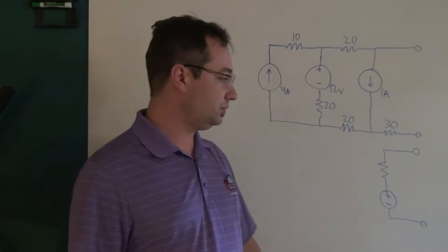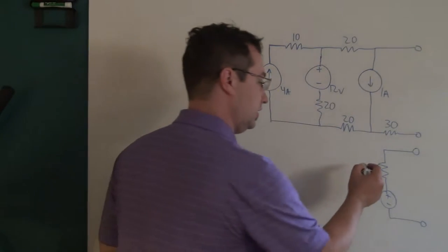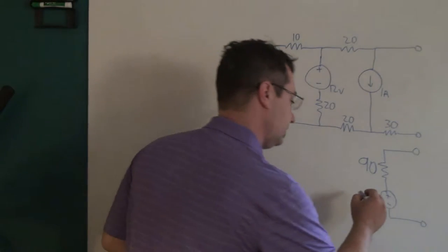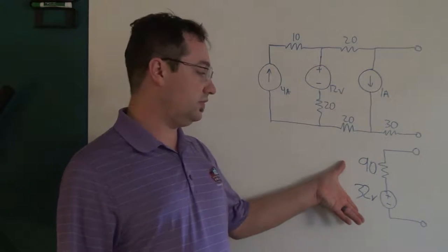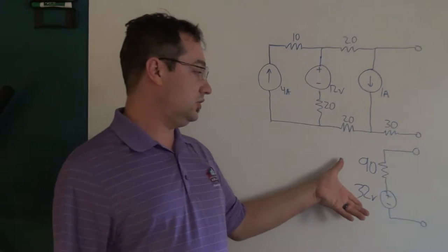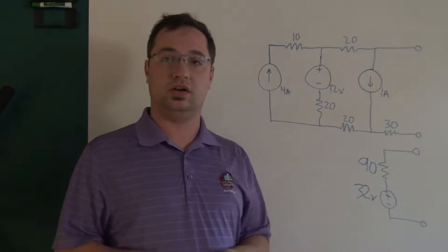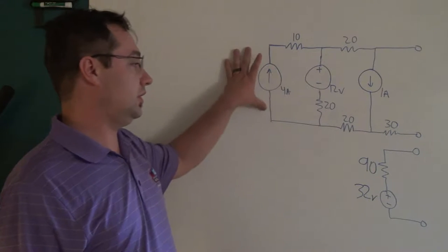Now to bring everything together: we know that our Thevenin resistance is 90 ohms, and we know that our open terminal voltage is 32 volts. And now we have the Thevenin equivalent of this circuit. As you can tell, this is far simpler than what we started with, and that's really the basic idea behind what Thevenin's theorem describes. This new circuit is substantially simpler than our old circuit.